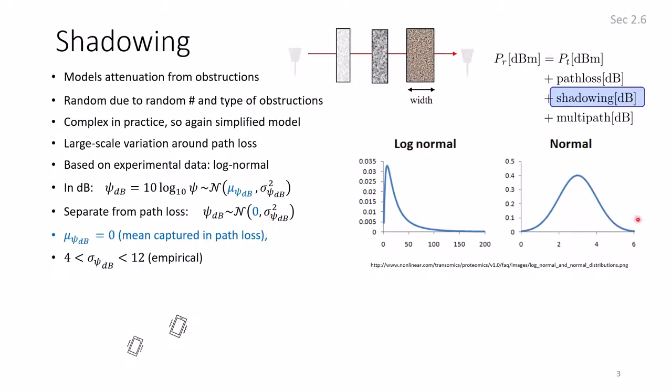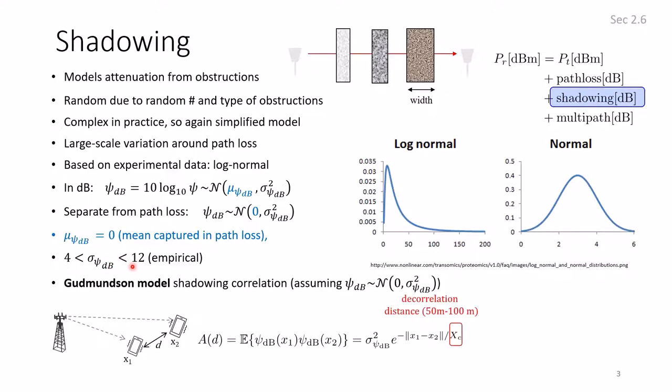So how much is this variance? It depends from one environment to another. If we have lots of obstacles in terms of numbers and type, then variance would become larger because it's expected to be different. Empirically, using experiments and measurements, people found out that the standard deviation is usually between 4 and 12. The standard deviation of the shadowing in dB is going to be between 4 and 12. That depends on the environment of interest.